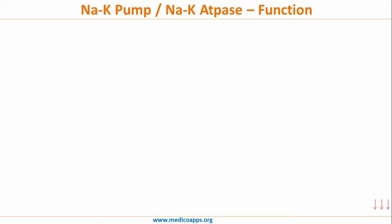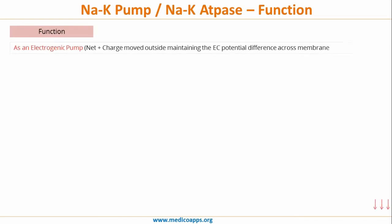Let's look at the function of sodium potassium ATPase. On the most basic level, it acts as an electrogenic pump: since three positive ions are moved out and two positive ions are moved in, a net one positive charge is moved out of the cell, making the electrochemical membrane potential inside the cell negative compared to the outside.